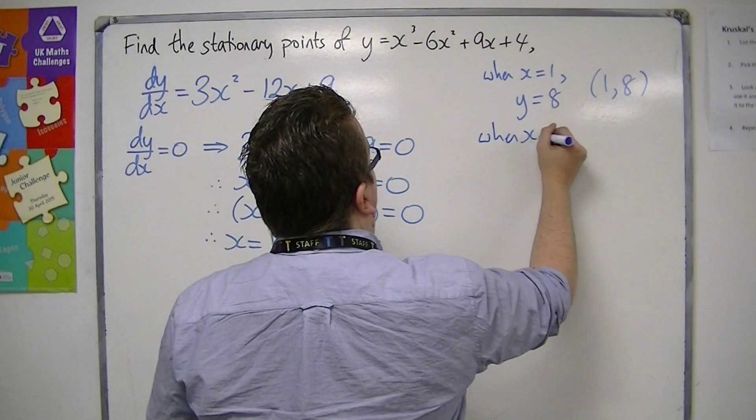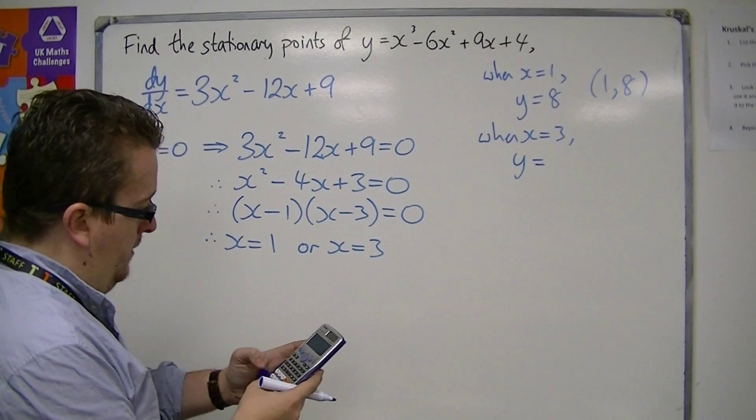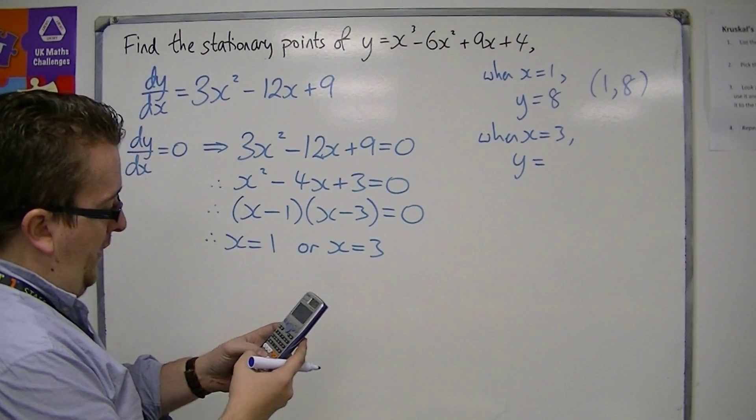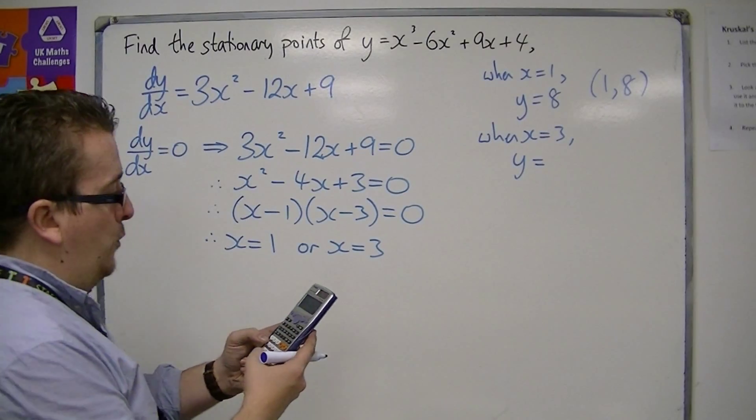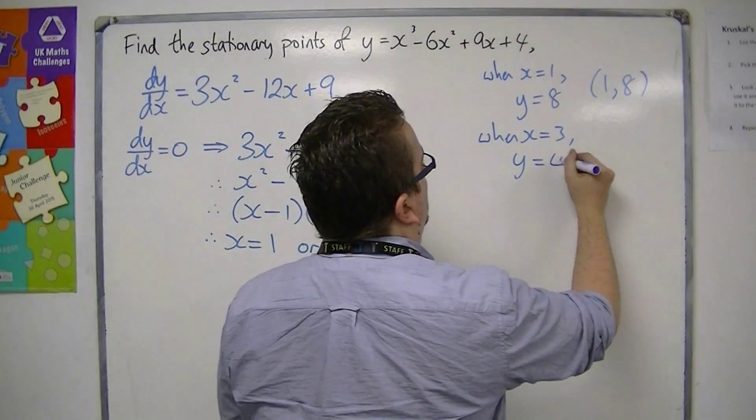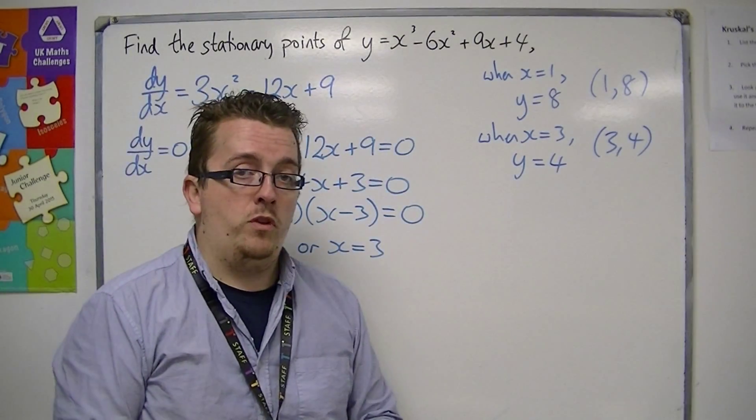And when x equals 3, y equals 3³ - 6 lots of 9, plus 9 lots of 3, plus 4, which is 4. So (3, 4) is the other stationary point.